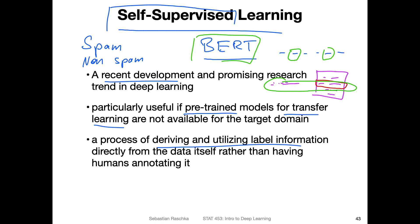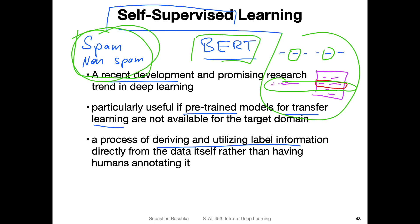However, the model still cannot predict spam or non-spam — it can only predict missing words or which sentences belong — but it helps the model deal with language. So after completing the pre-training of the BERT system with self-supervision, you can take this pre-trained system and fine-tune it on the smaller spam / non-spam dataset for the prediction task. During pre-training it learned how to understand language, and then you apply that to the classification task. This step is called pre-training, followed by transfer learning and fine-tuning on the real dataset you care about.